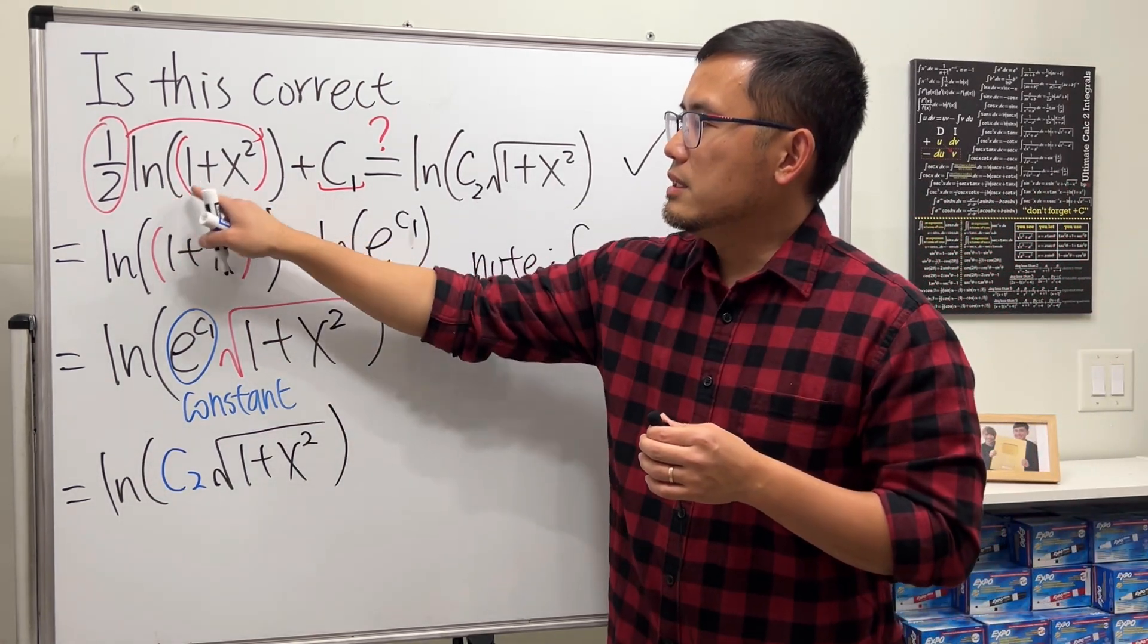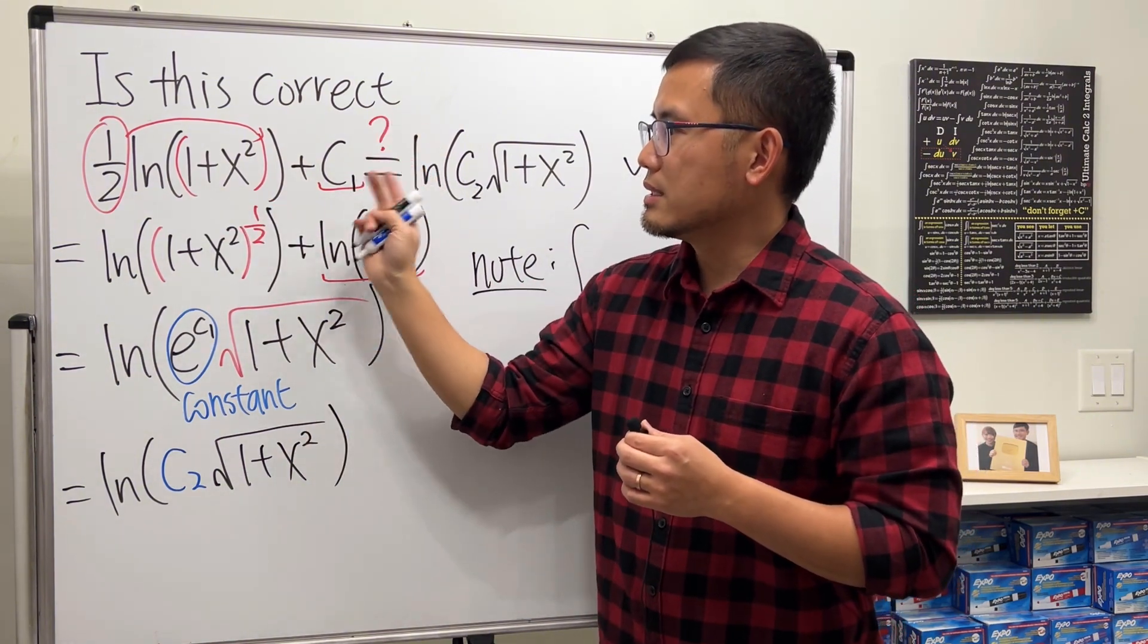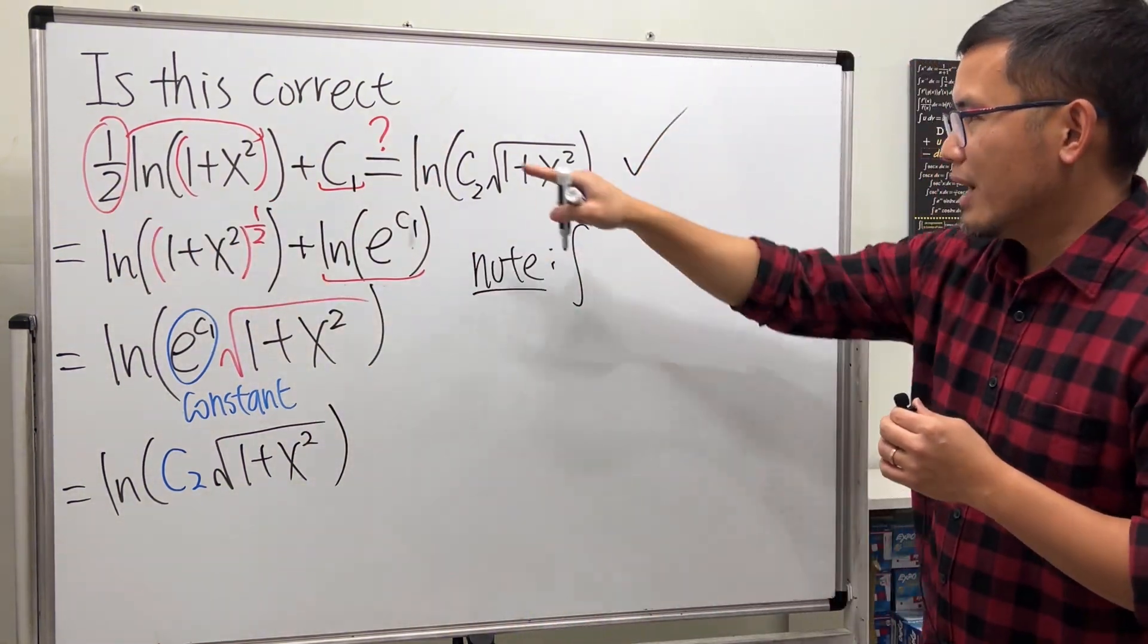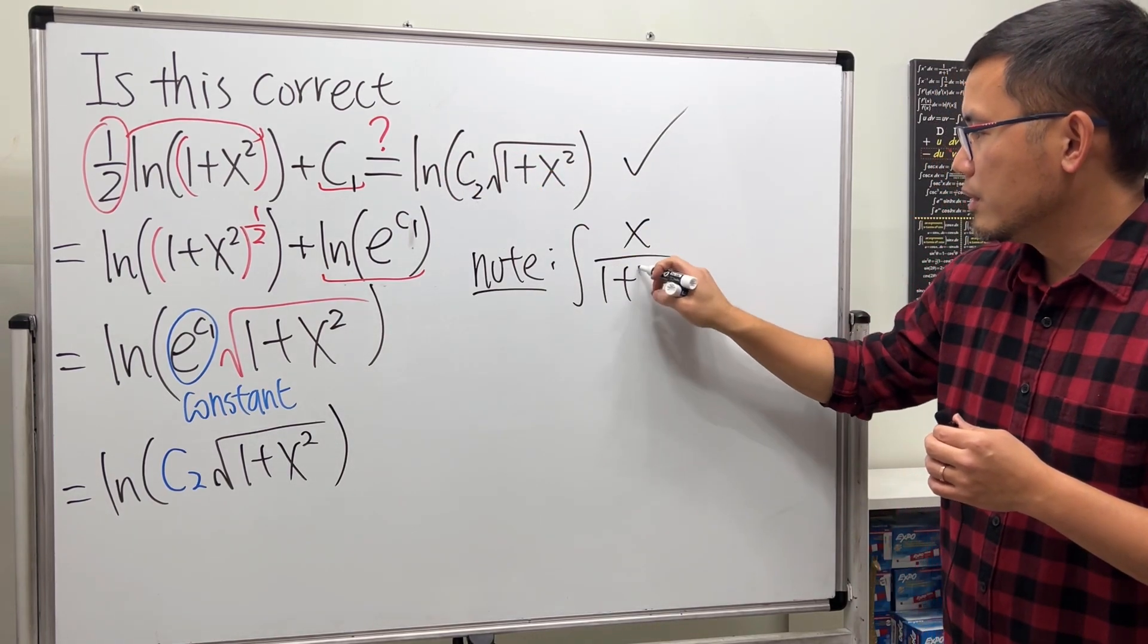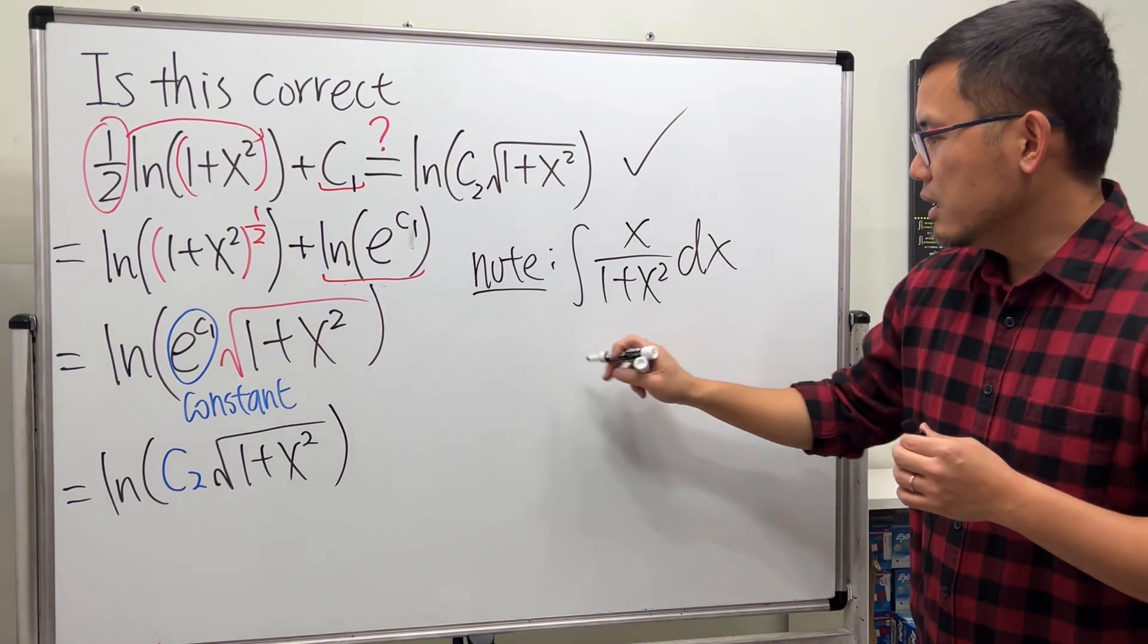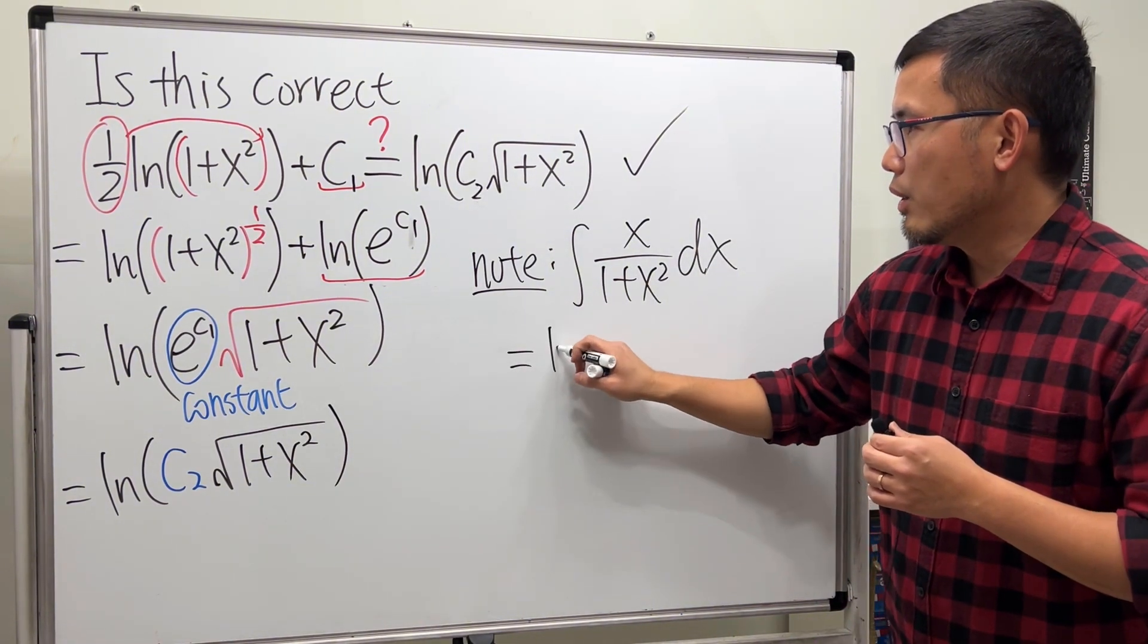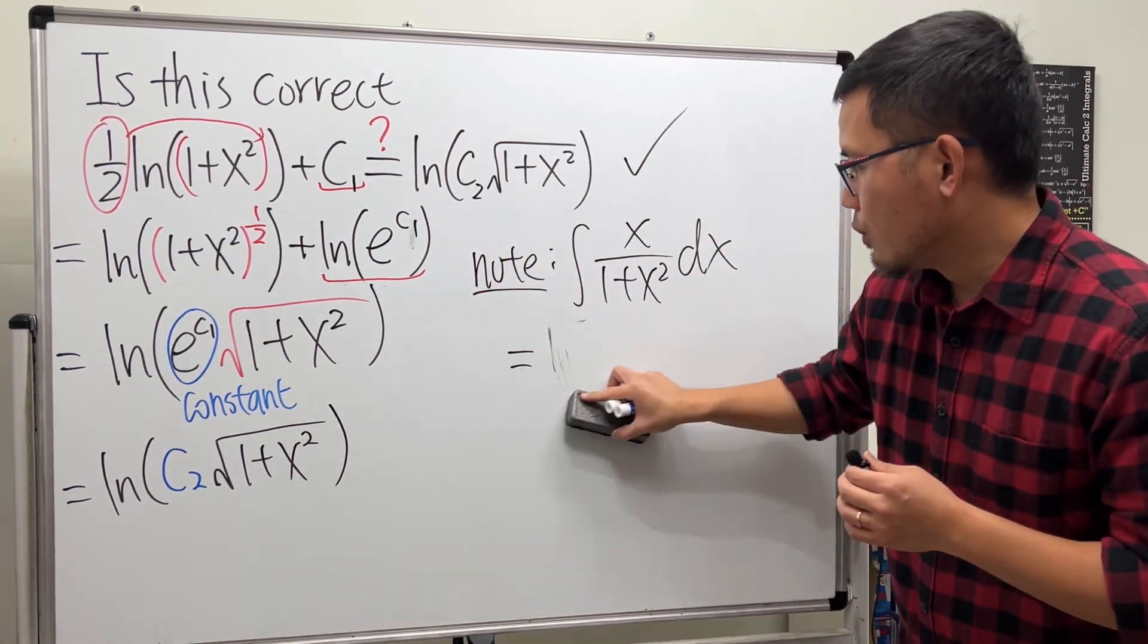So the integral is this: note, integral. The root here, this is the one over that, and then use the chain rule. You have the two x, two and two cancel, so you have the x on the top over the input on the bottom. So this is the integral.